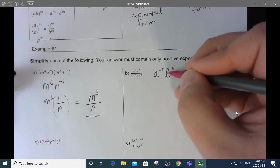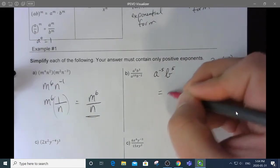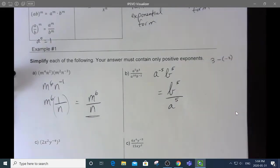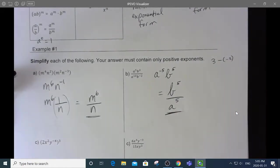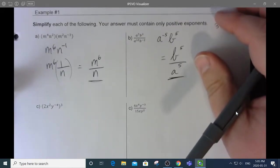That's simplified, but this isn't. So, that's going to be b to the 5 over a to the 5. And that's my simplest form.